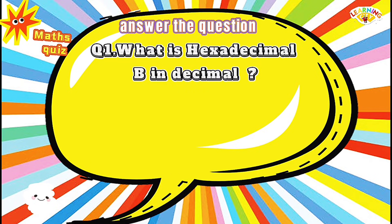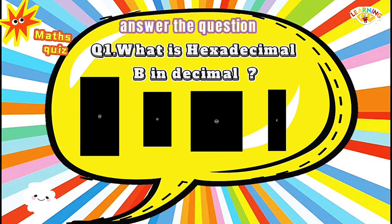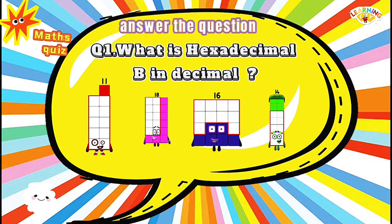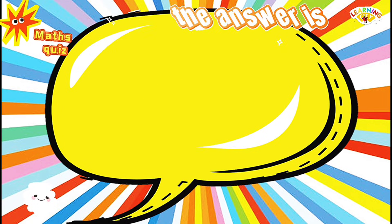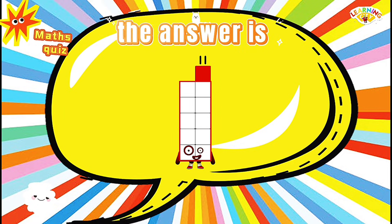Question No. 2: What is hexadecimal B in decimal? Options: 11, 18, 16, 14. The answer is 11.